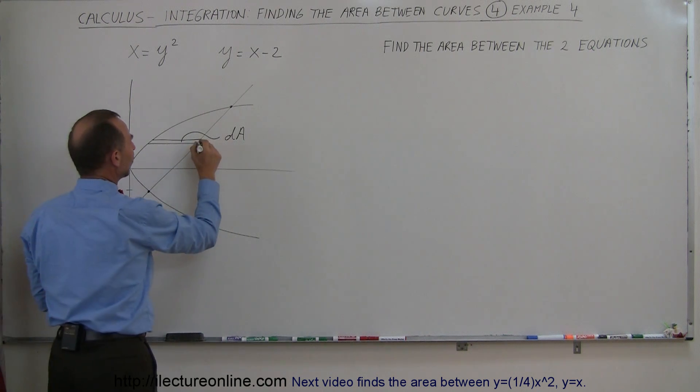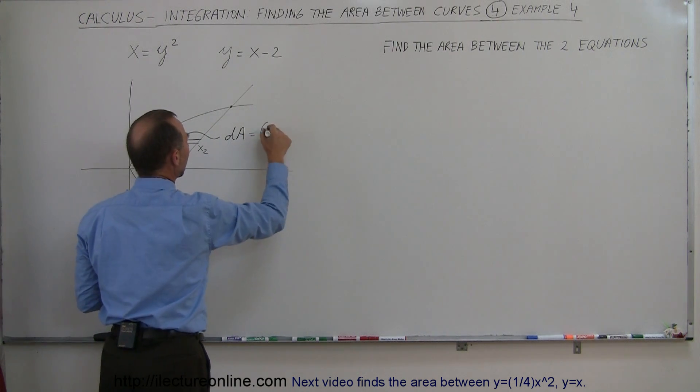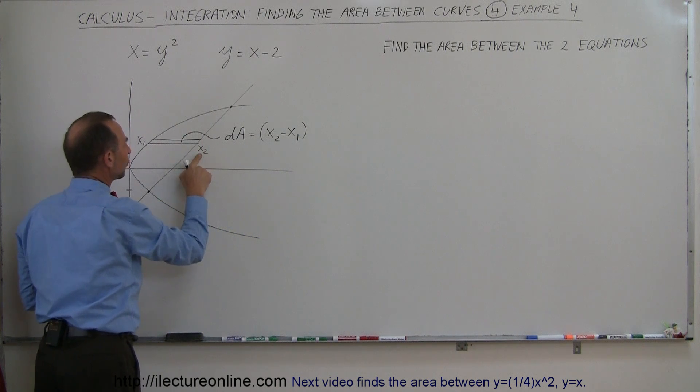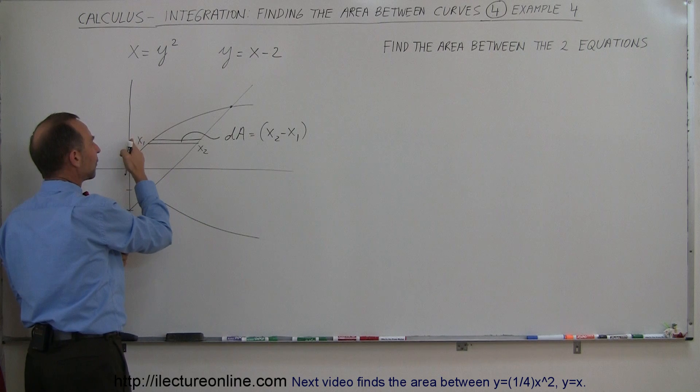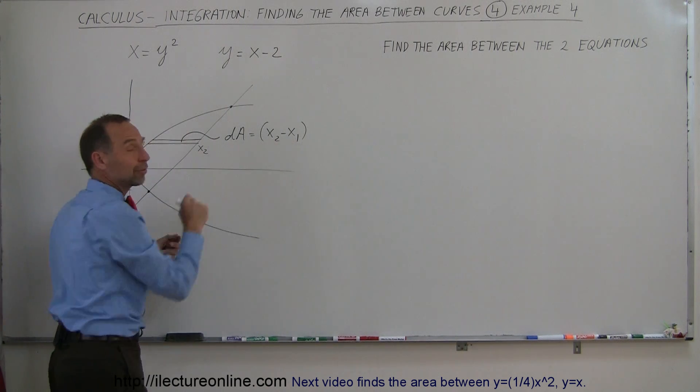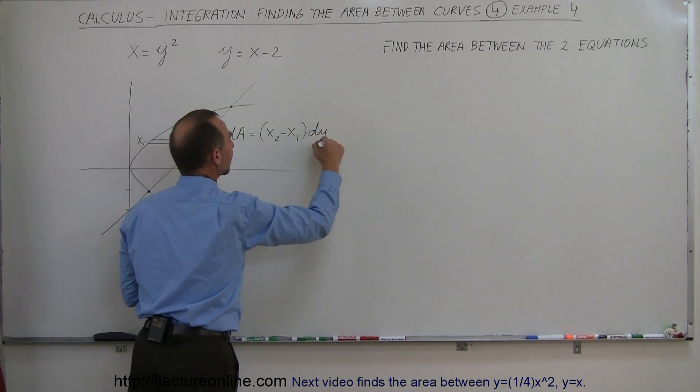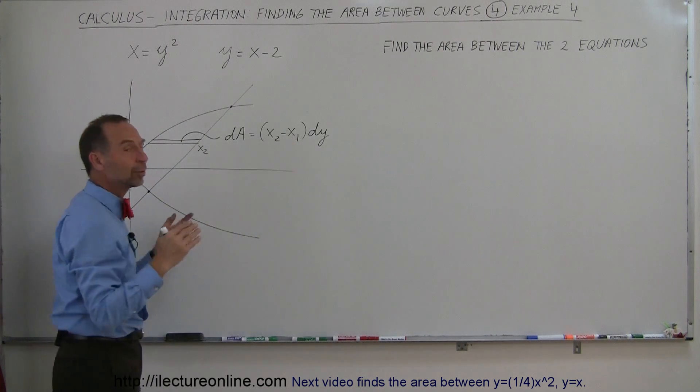So if we call this point right here x2, and this point right here x1, my area element is now going to be x2 minus x1. The reason why I put x2 first and x1 last is because this will have a larger x value, and this will have a smaller x value, so when I go x2 minus x1, I get a positive quantity right there. And then my width here is my dy. Now we still have to define what x1 and x2 are, and I'll do that in just a moment.